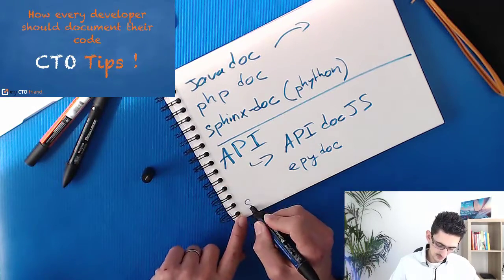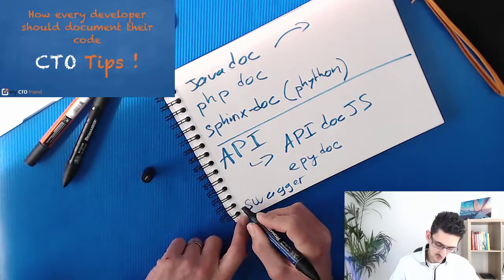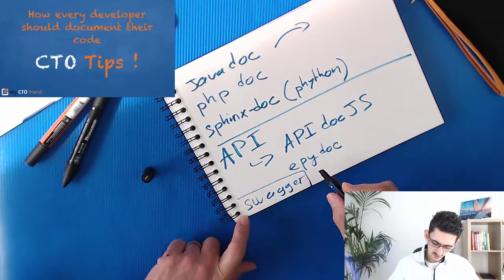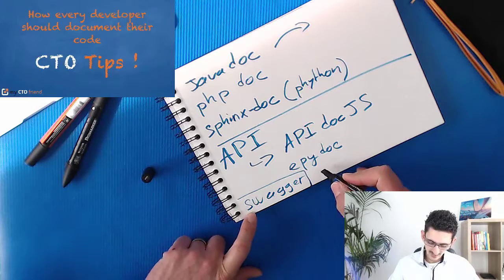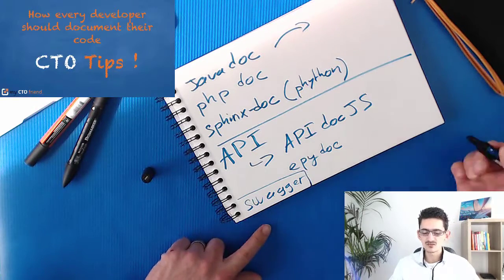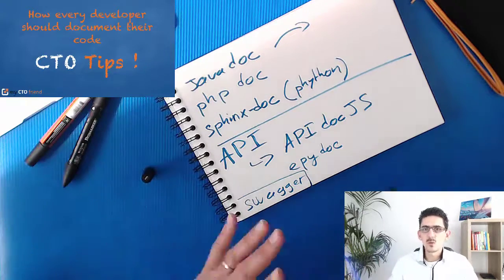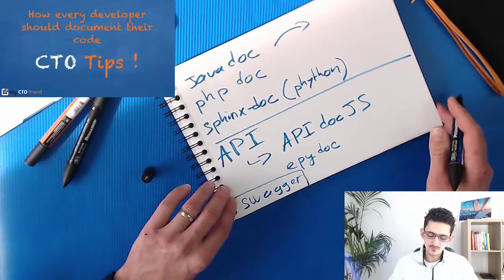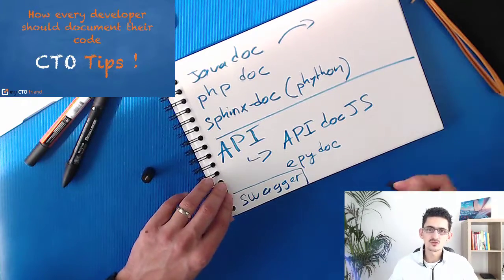Otherwise, there is Swagger. Double-check that your engineers are using Swagger. Swagger is another approach — it allows the developer to define the API structure and then generate some source code, which is the other way around, but also helps the developer and the source code to be well structured.